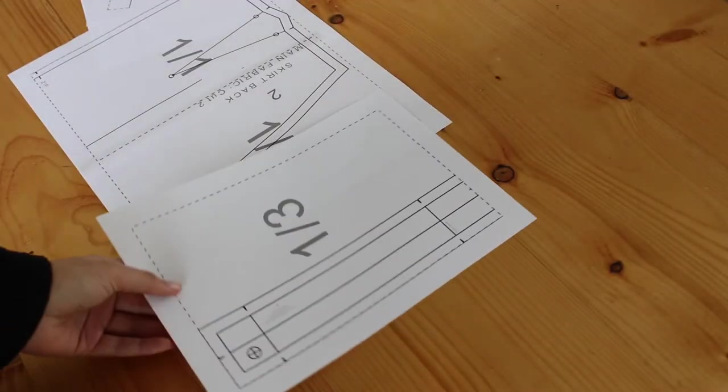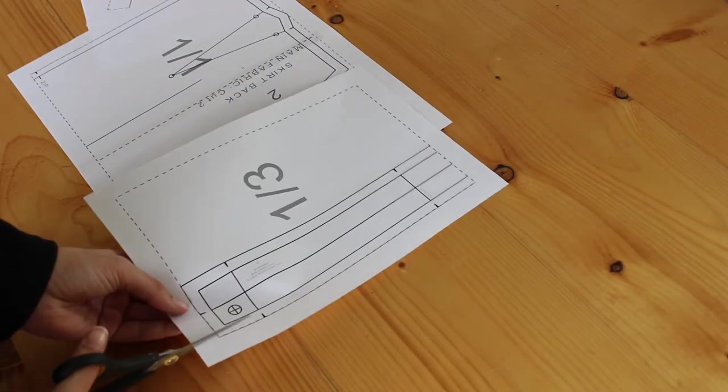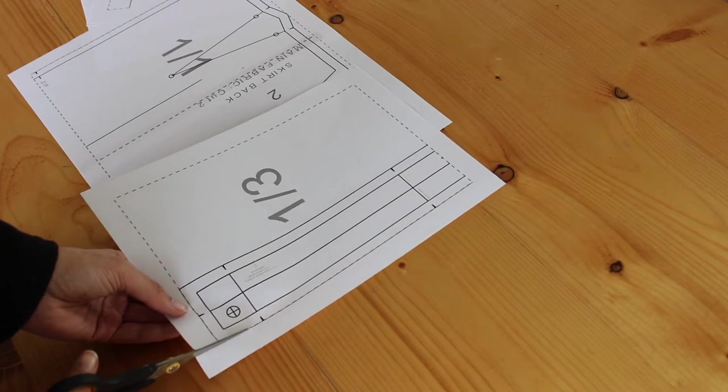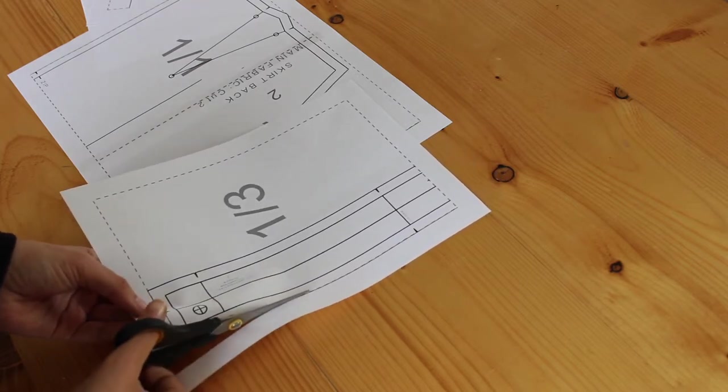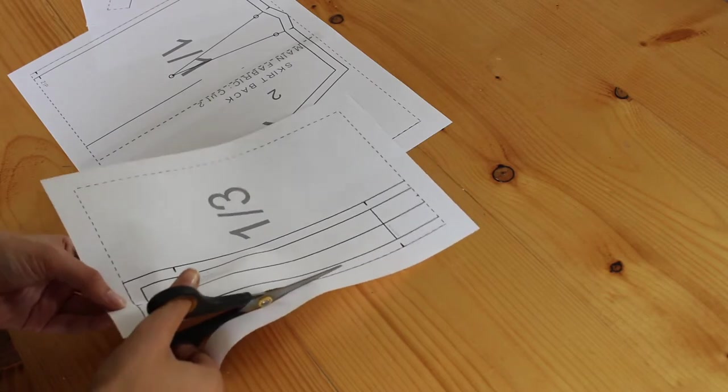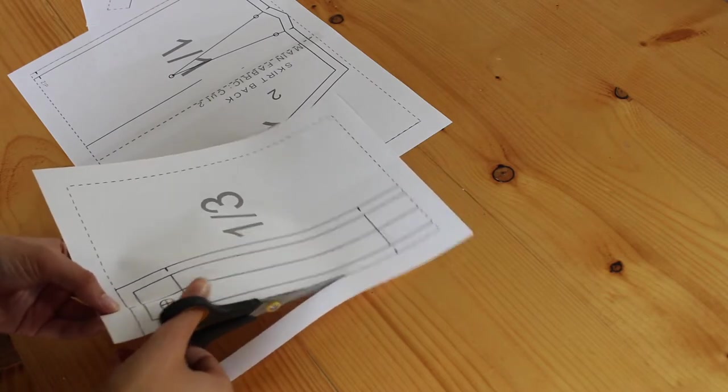Hi everyone! Today I'm going to be showing you guys how to sew a miniskirt. As always, you can buy the sewing pattern for this skirt for only $2.50 in my Etsy shop. The link is in the description.